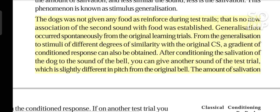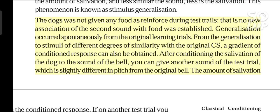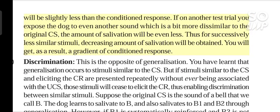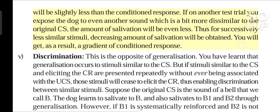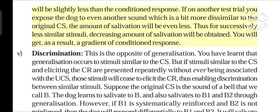From the generalization to stimuli of different degrees of similarity with the original CS, a gradient of conditioned response can also be obtained. After conditioning the dog's salivation to the sound of the bell, you can give another sound on a test trial which is slightly different in pitch from the original bell — the amount of salivation will be slightly less than the conditioned response. If on another test trial you expose the dog to a sound even more dissimilar to the original CS, the amount of salivation will be even less. Thus for successively less similar stimuli, decreasing amounts of salivation will be obtained, giving you a gradient of conditioned response.